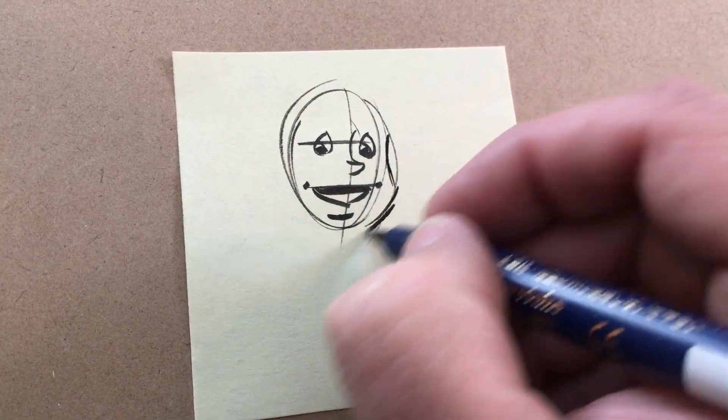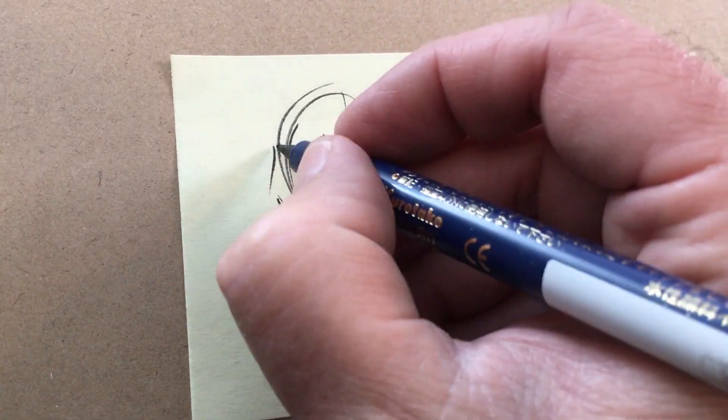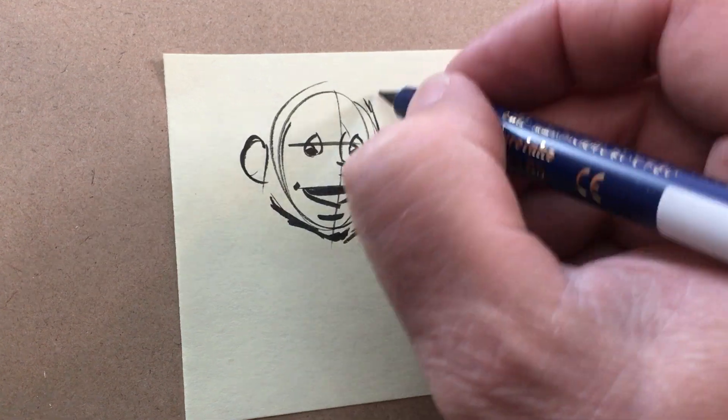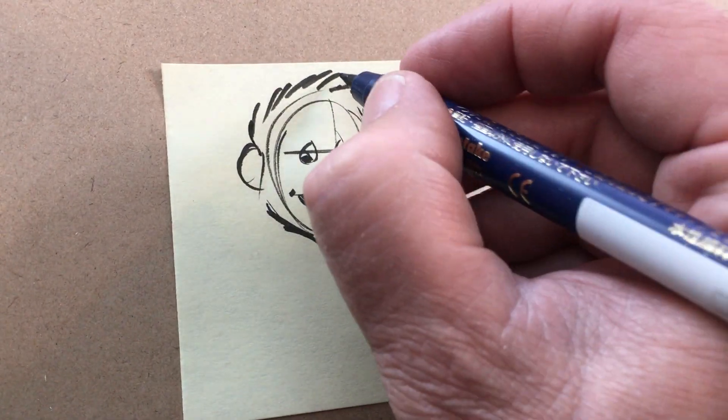He's got kind of a wedge-shaped face, lots of sharp angles on the kid. He's got big ears, and he's got wild hair. He's a redhead, you can't tell in this drawing, but he's a redhead.